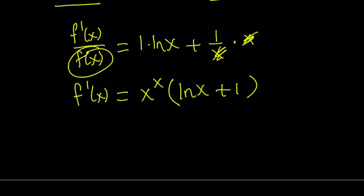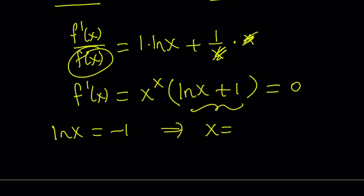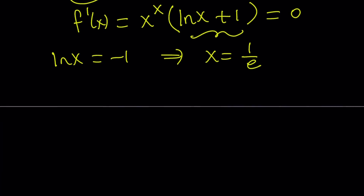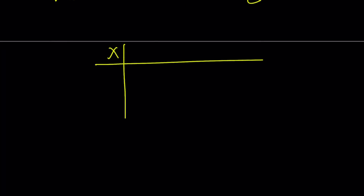x to the power x cannot equal 0 — it's only defined for positive numbers and can't be 0 either (0 to the power 0 is indeterminate). So we need ln x plus 1 to equal 0, which gives ln x equals negative 1, implying x equals e to the power negative 1, meaning x equals 1 over e. That is a critical point. I'm going to make a table: x, f prime, and f, with the only root at 1 over e.